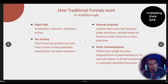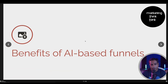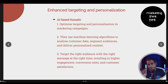Then you have static personalization. While there might be some segmentation or personalization, it's typically based on broad categories or manually identified personas. You defined your marketing activities keeping in mind those predefined manual segments you had decided. There was no dynamic learning, no learning on the go, no learning from your mechanisms, no automation. That pretty much led us to look at AI-based funnels — could I do anything better that saves me time while improving performance at the same time?